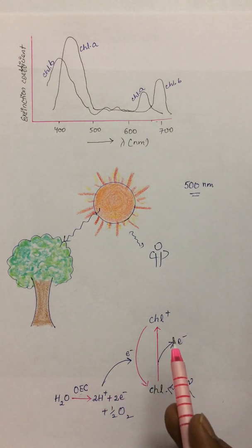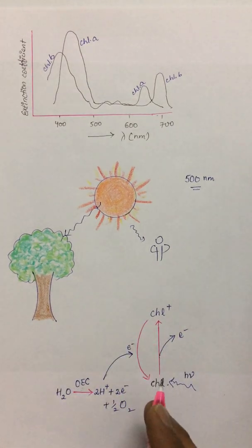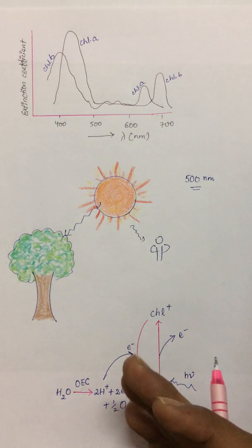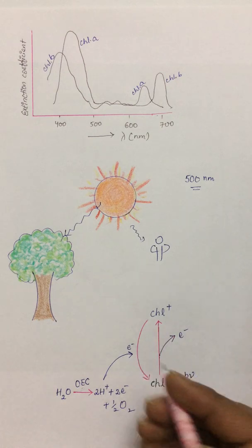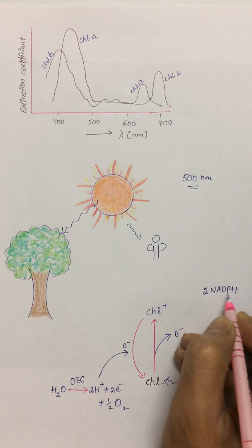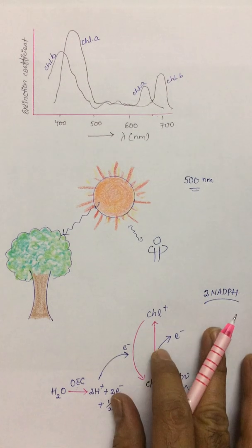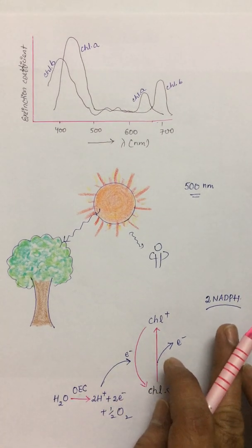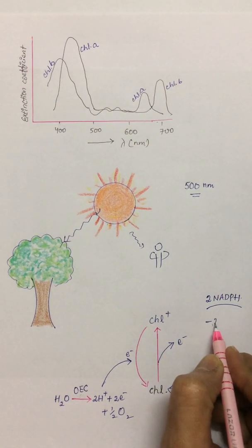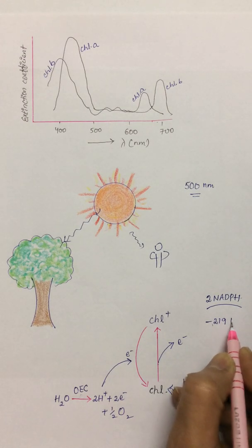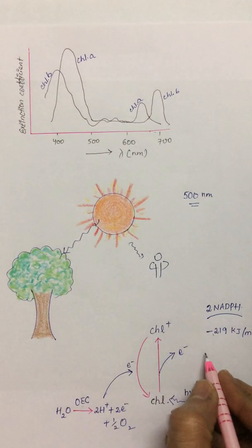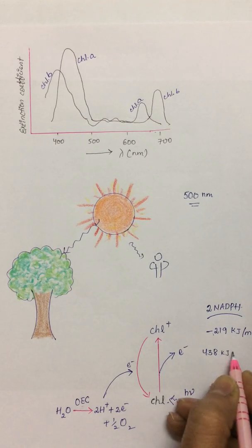For the process of photosynthesis, some energy is required. Once the process of photosynthesis starts, two NADPH are required to be produced. In the light reaction, one of the end products is NADPH. For the production of one NADPH, the free energy involved is about 219 kilojoules per mole, and for the production of two NADPH, it is 438 kilojoules per mole of energy.